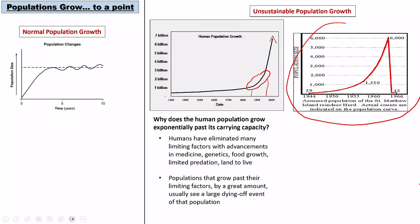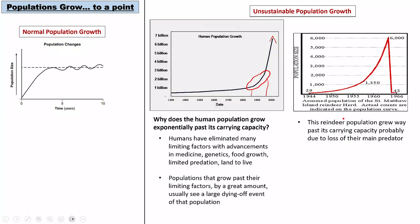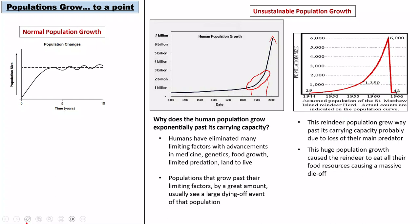The reindeer population spiked — probably because they lost a predator — causing a huge spike in population. With that spike, they probably ate all their food, causing a massive die-off. But a few survived — about 42 of them — perhaps because they had an adaptation for a different food source, a smaller body size requiring fewer nutrients, or a slower metabolism. They survived because they were well-adapted to the changed environment.